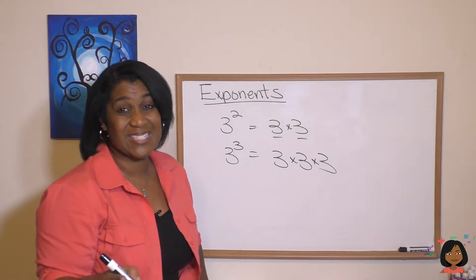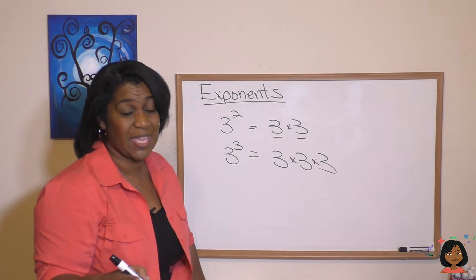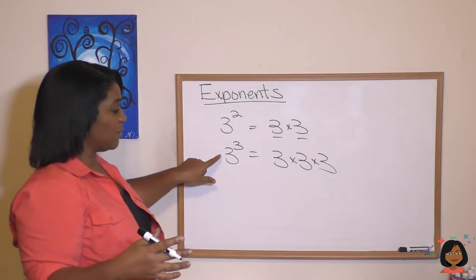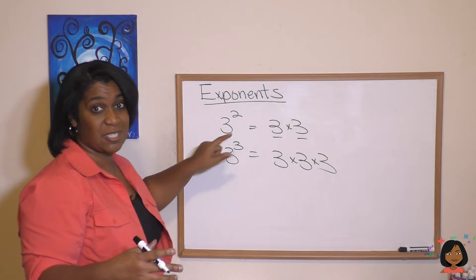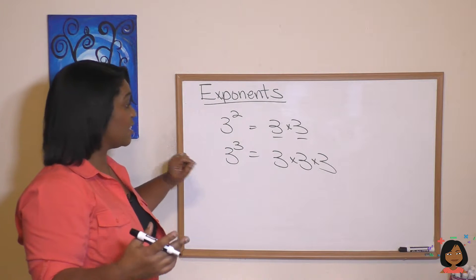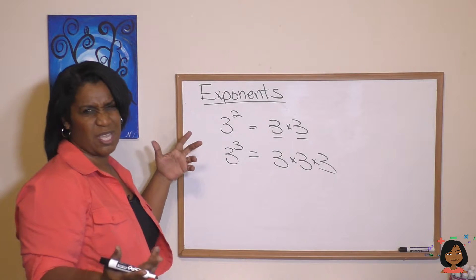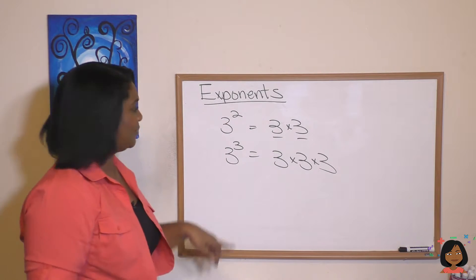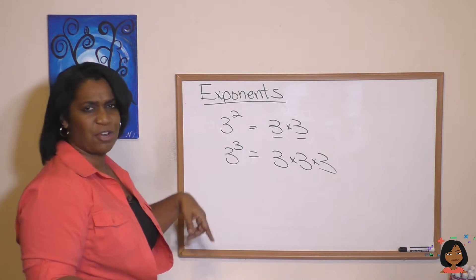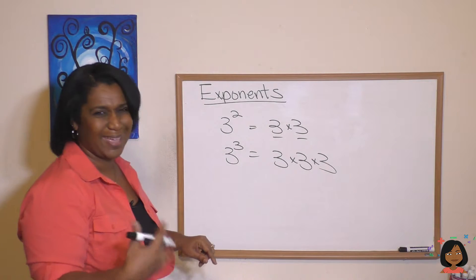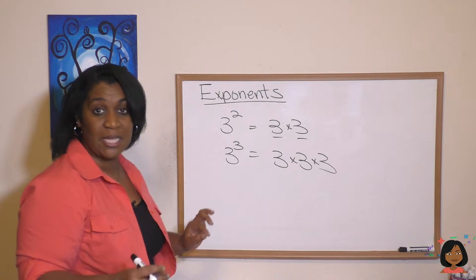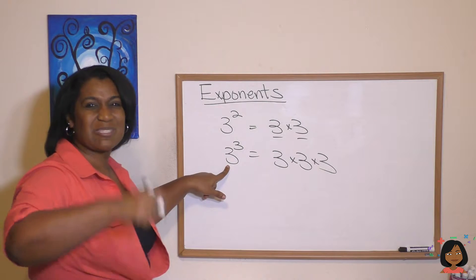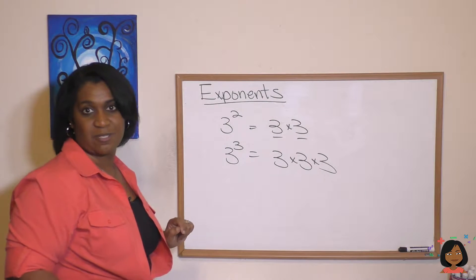One of the common mistakes I see students make is they think it's a multiplication problem of simply multiplying the number times its exponent. I'll see them do three squared equals six because they just do three times two. Three to the third equals nine — three times three. It means take your number and multiply it times itself this many times.